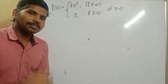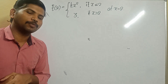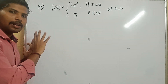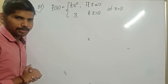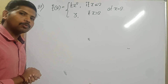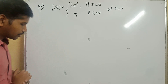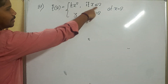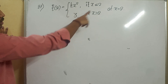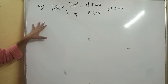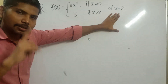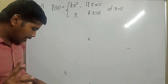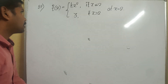Welcome back students. This is the last session for the continuity of the function. In this part I will finish off all types of problems of continuity, and later I can move to differentiability. I already wrote the function: f(x) = kx² for x less than 2, and 3 for x greater than 2. At x equal to 2, the given function is continuous. I need to find the value of k.